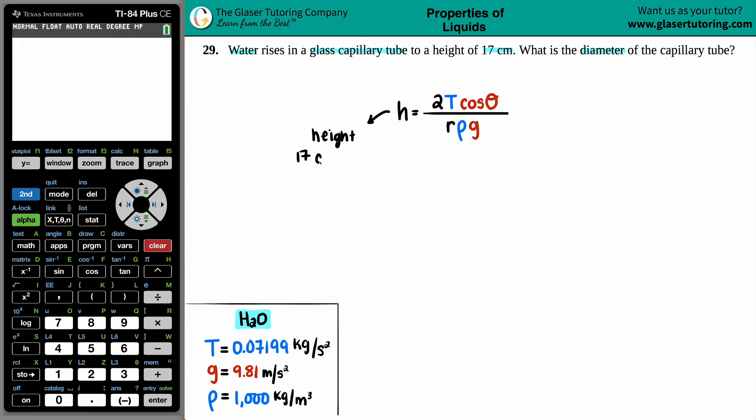Well, they did tell us that the height was 17 centimeters, so I guess we'll leave it as that for now. Now, two is a constant number here. It's two times capital T. For most of chemistry, capital T is always temperature, but not in this case.